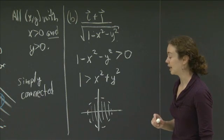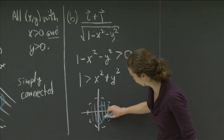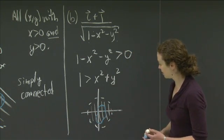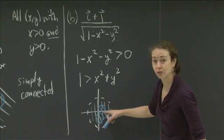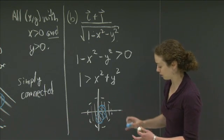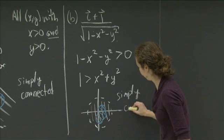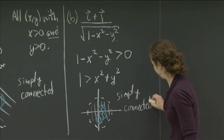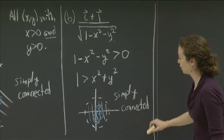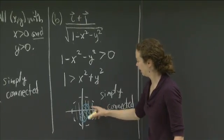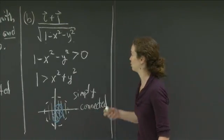Is this region simply connected? It is, for the same reason as before: if you take any closed curve in the region and look at its interior, every point on that interior is also in the region. So it is simply connected. We now have two regions that were simply connected — different looking regions, but in both cases any closed curve had its interior fully contained in the region.